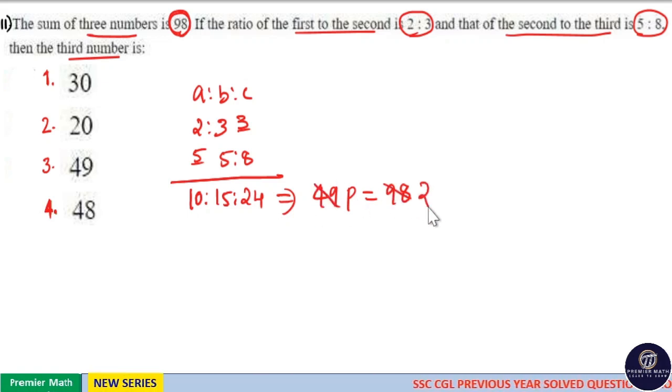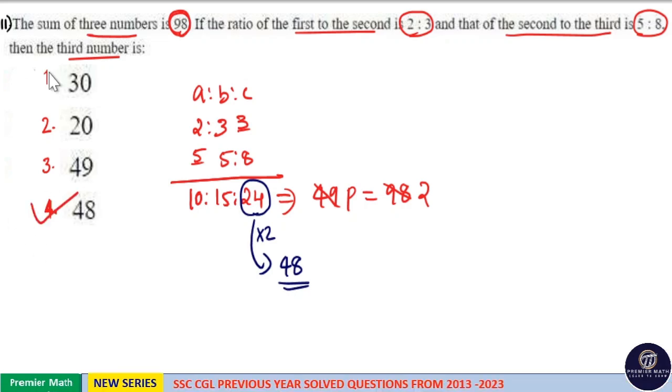The actual sum is 98, the ratio sum is 49 parts, so one part equals 2. We need to find the third number, which is 24 parts. So 24 times 2 equals 48, which is your answer. Option 4 is your answer.